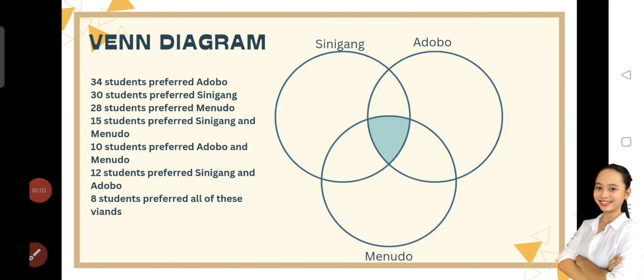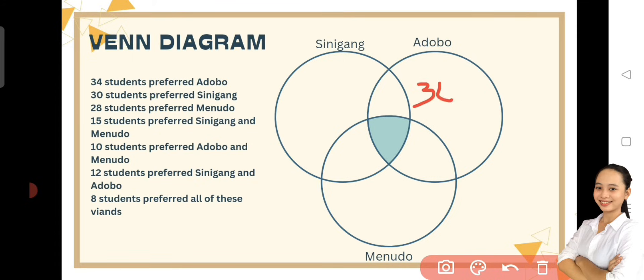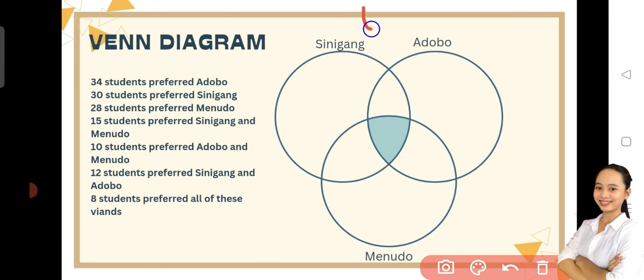And now, let's proceed to solving using Venn diagram. Alam nyo ba na ang kadalasang pagkakamali ng mga students pag nagsisolve ng Venn diagram ay ganito. Kunyari, 34 students preferred Adobo, isinusulat nila ay 34 sa loob ng Adobo. Ganon din yung sa Sinigang na 30 and Menudo na 28. Which is pag pinag-add nating lahat, ang magiging equal niya ay sobra pa sa ating universal na which is 72. Which is wrong.